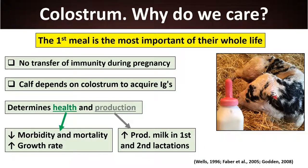Good passive transfer of immunity will decrease morbidity and mortality, increase growth rate, and increase future production. There is evidence that calves with good passive immunity transfer produce more milk in their first and second lactations.